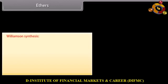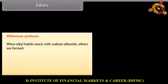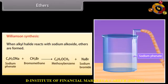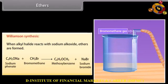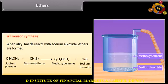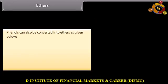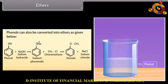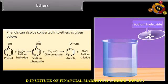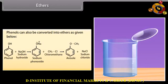Williamson synthesis: when an alkyl halide reacts with sodium alkoxide, ethers are formed. Bromomethane mixed with sodium phenate gives methoxybenzene and sodium bromide. Phenols can also be converted into ethers: sodium hydroxide is added to phenol to form sodium phenoxide, then on adding chloromethane, it forms anisole and sodium chloride.